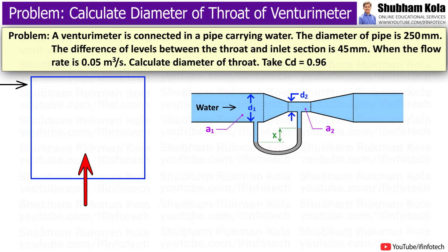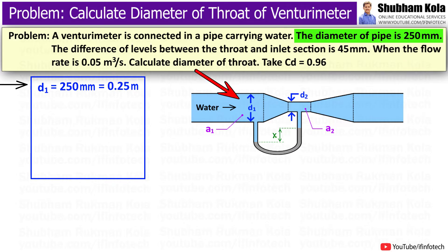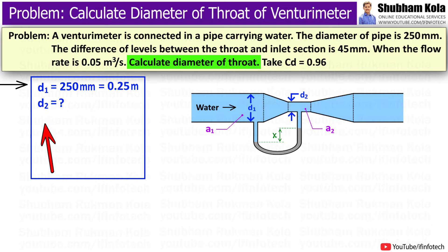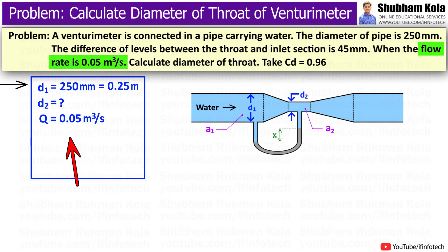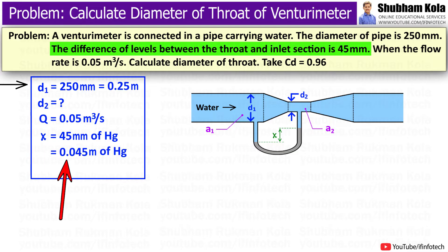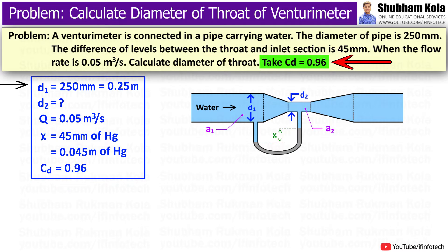To solve this problem, I will first write down the given data: the diameter of the pipe, i.e., the inlet diameter of the Venturimeter, is 250 mm, equal to 0.25 m, denoted as d1. We want to calculate the throat diameter, denoted as d2. The flow rate Q is 0.05 m³ per second. The difference of levels between inlet and throat is 45 mm, i.e., x = 0.045 m of mercury (Hg). The coefficient of discharge CD is 0.96.